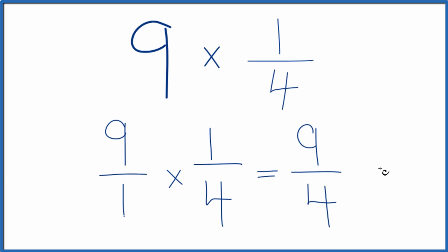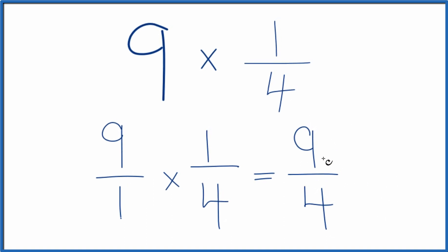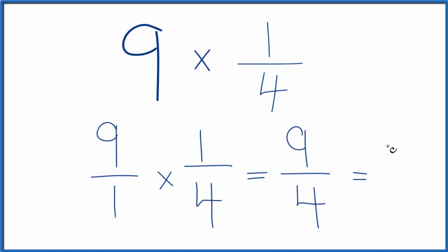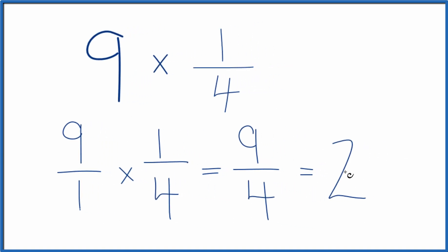This is an improper fraction, though, because 9 is bigger than 4. You could change it to a mixed number. 4 goes into 9 two times. 2 times 4 is 8, so we'd have 1 left over. Bring the 4 across, and that's equivalent to the mixed number 2 and 1 fourth.